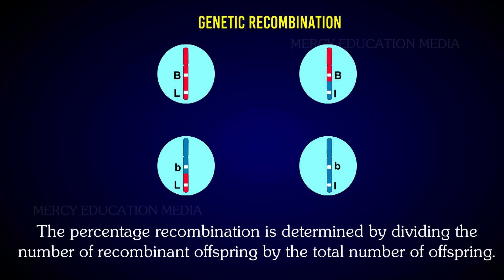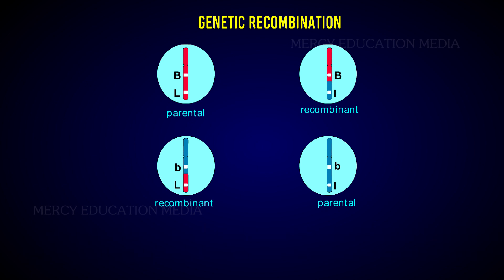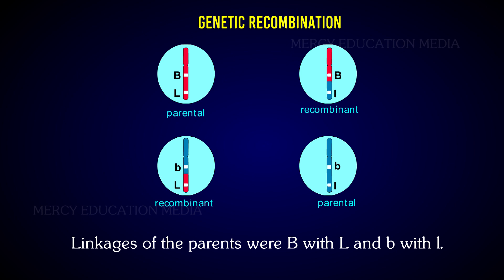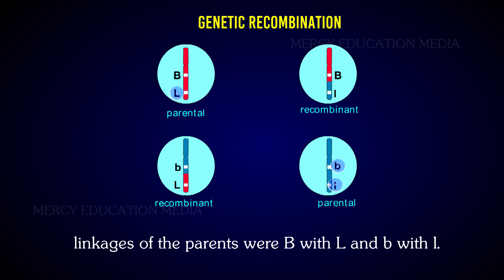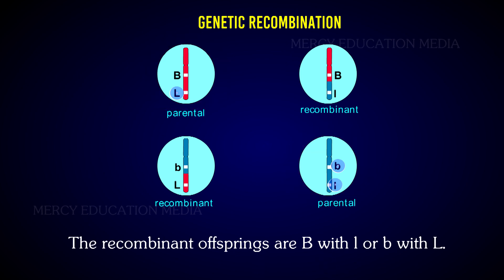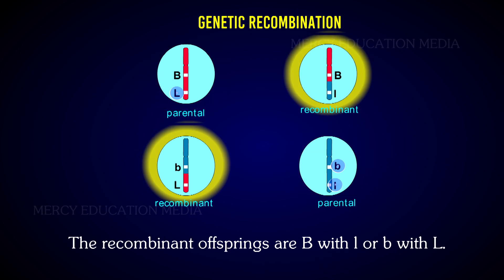The percentage recombination is determined by dividing the number of recombinant offspring by the total number of offspring. In the diagram, the linkages of the parents were B with L and B with L. The recombinant offspring are B with L or B with L.